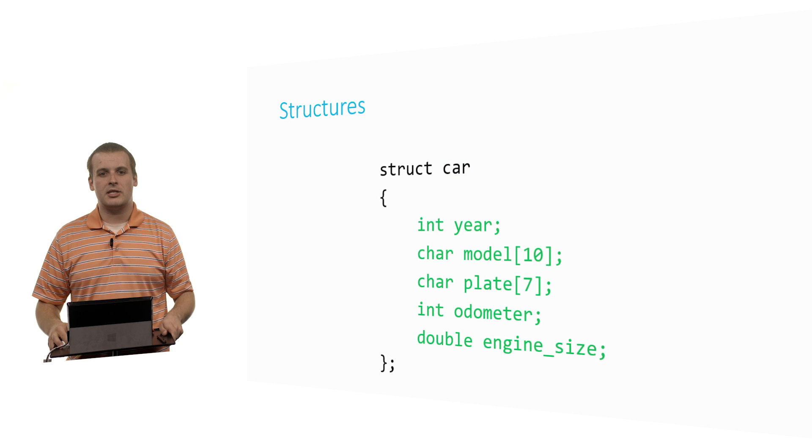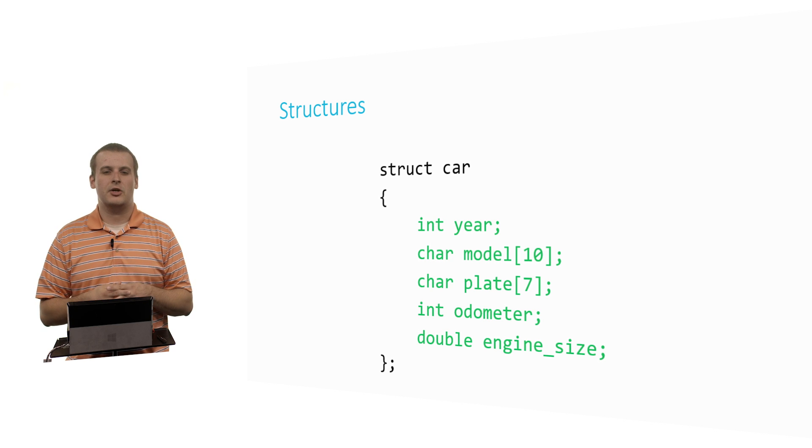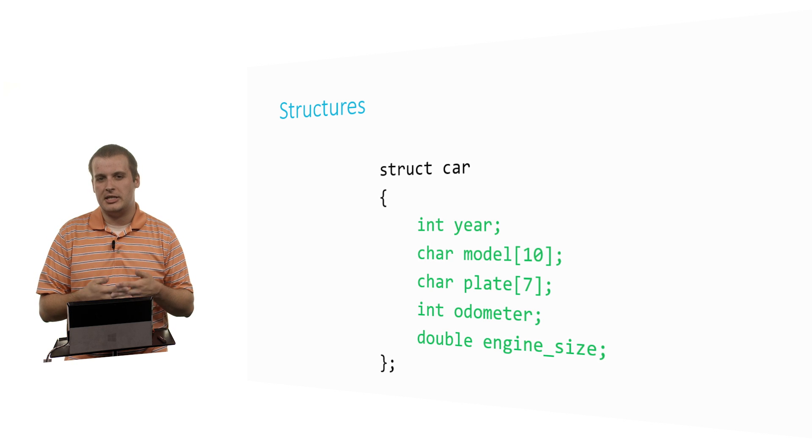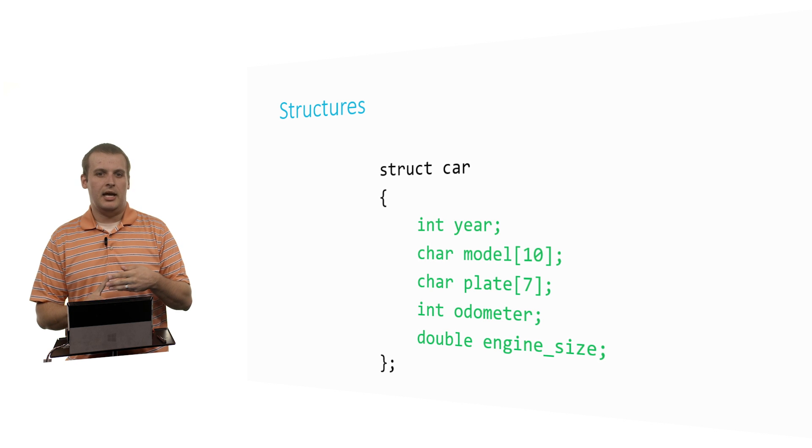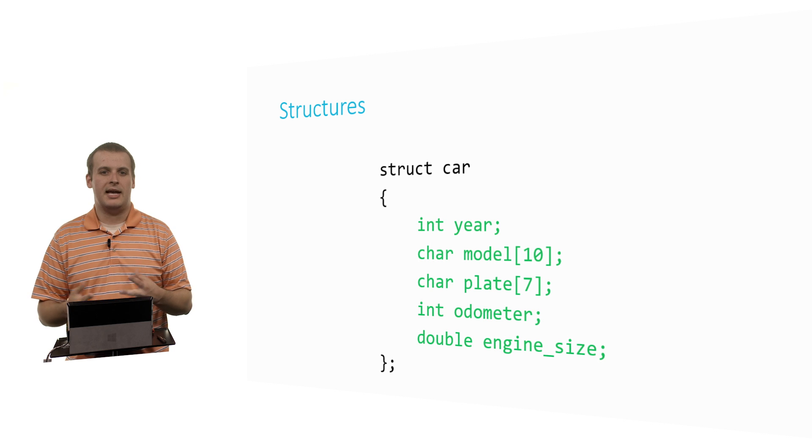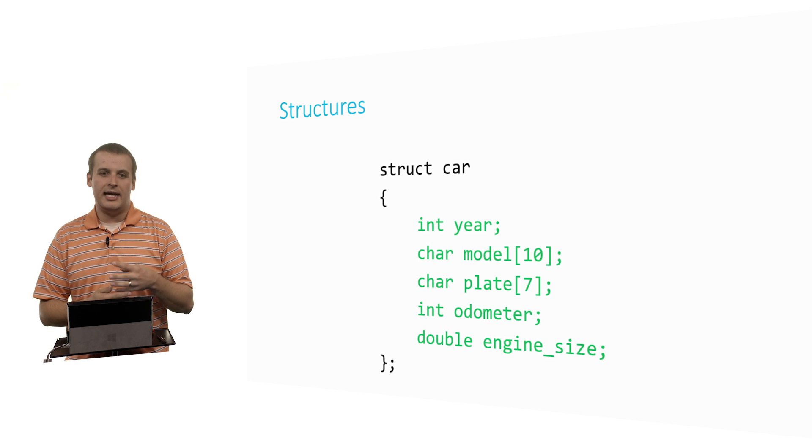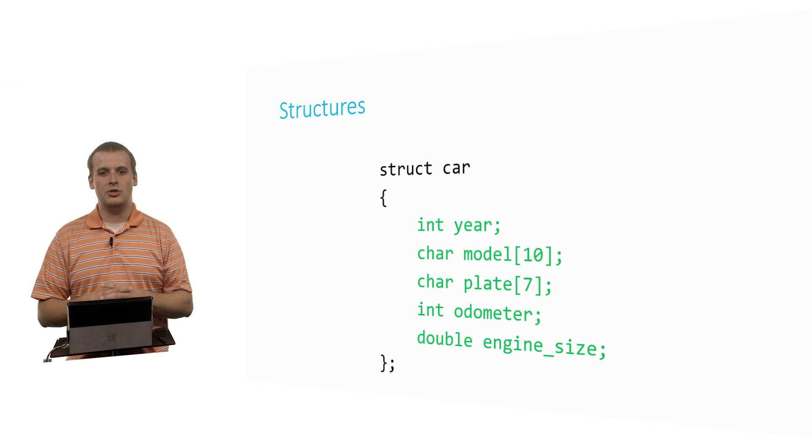Inside of the curly braces are all of the so-called fields or members of the structure. What are some of the things that are inherent in a car? Well, it usually has a year, has a model name, a license plate, an odometer, and maybe an engine size. As you can see, I'm mixing up integers and characters and doubles. They're all going to be part of this new data type.